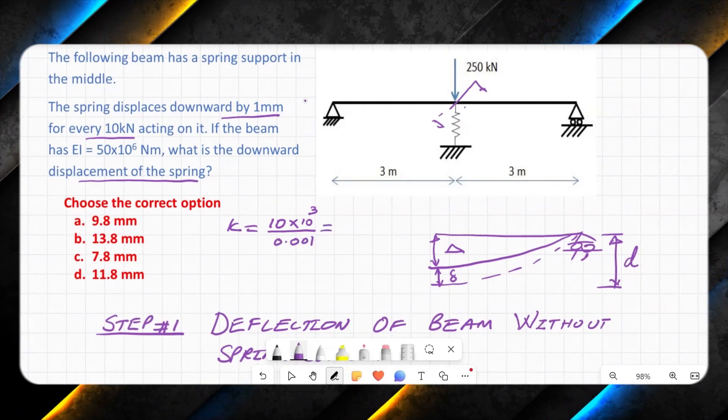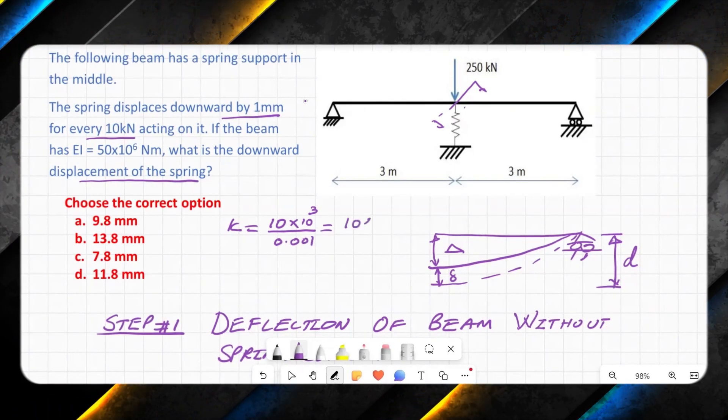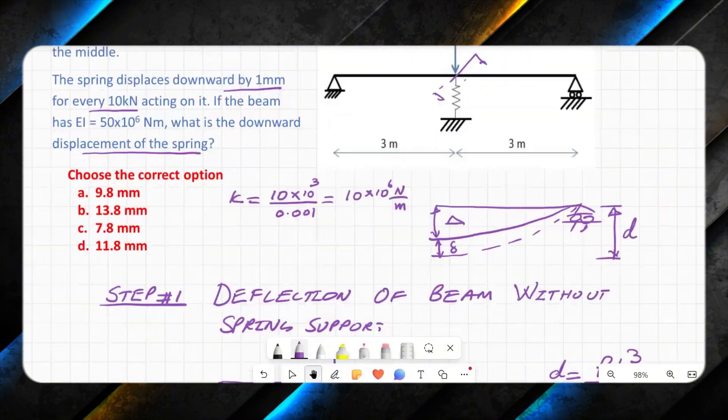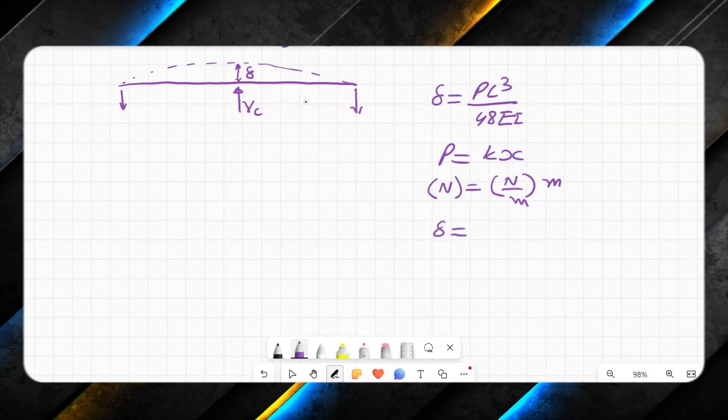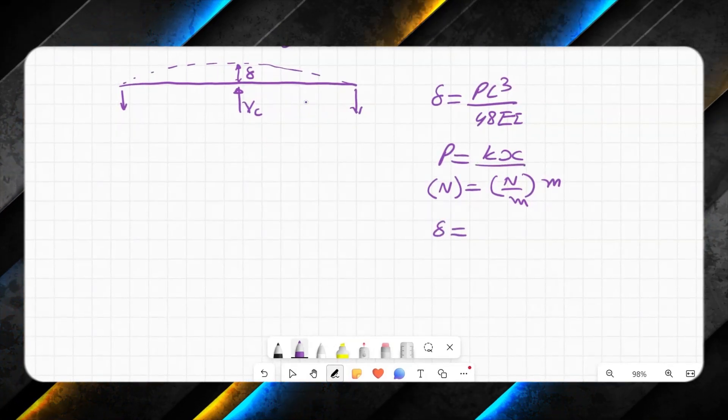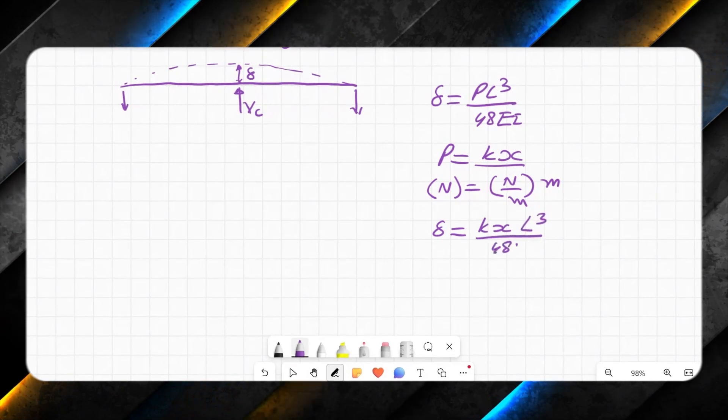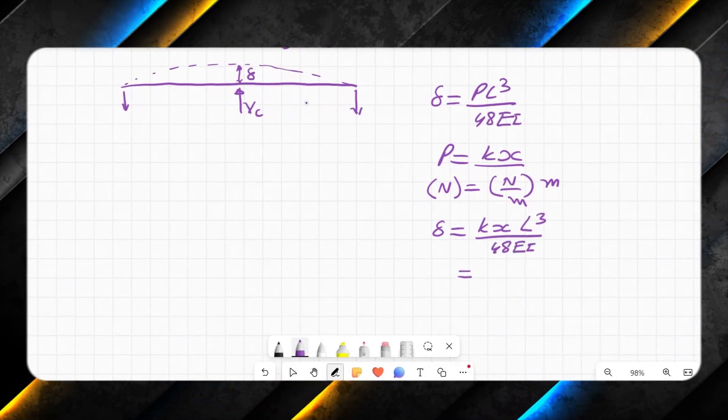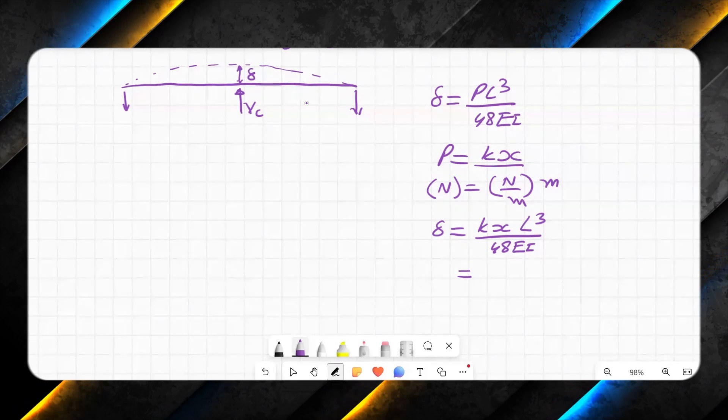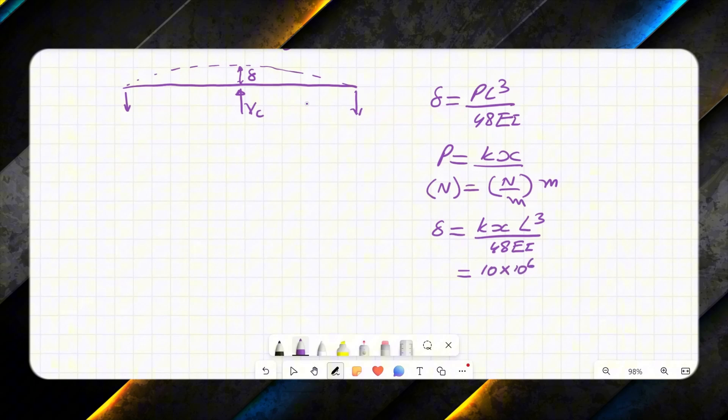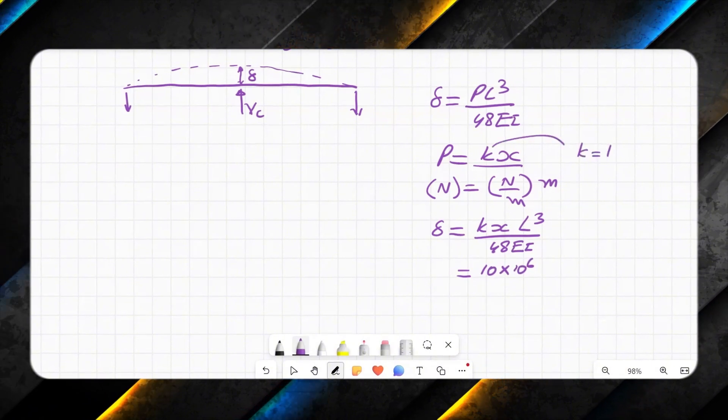If I convert this, that will be 10 × 10^6 newton per meter. So I will use this value here. So delta, I would say, instead of P, I have kx times L³ over 48EI. If I put value of k—value of k is 10 × 10^6, which you saw earlier.